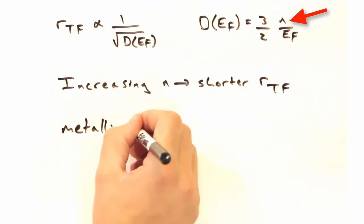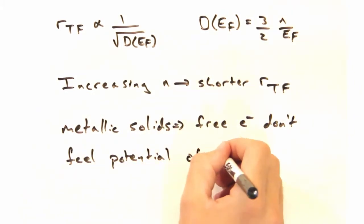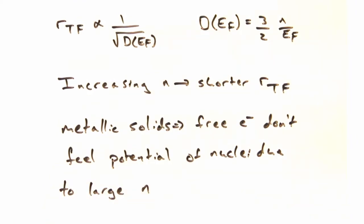Going back to metallic solids then, the reason why the free electron model works so well is because the electron rarely gets close enough to feel the atomic nuclei.